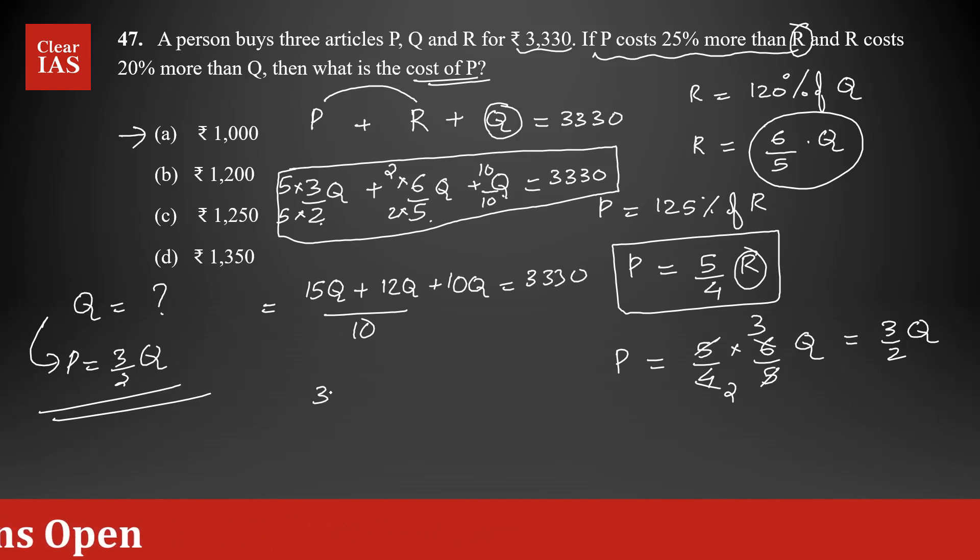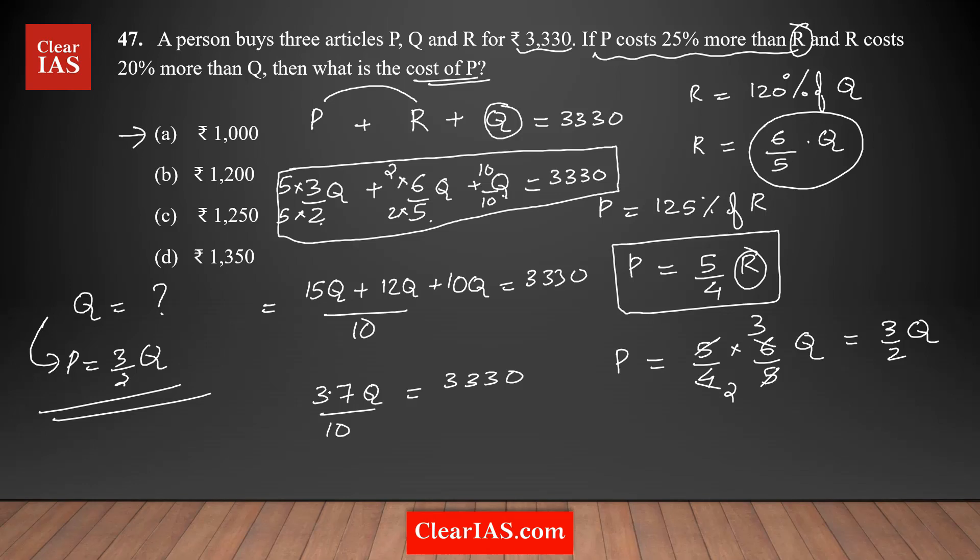15 plus 12 is 27, plus 10 is 37. So you have 37Q/10 = 3330. In most cases this will be exactly divisible—they won't give you decimal answers in these questions.